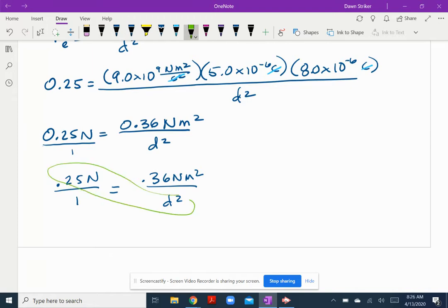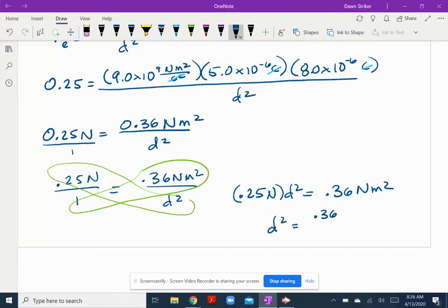Multiply those and then multiply those. And what you'd like is equal to 1 times 0.36. So 0.36 Newton meter squared. So then I can see that D squared is going to be equal to 0.36 Newton meter squared divided by 0.25 Newtons.